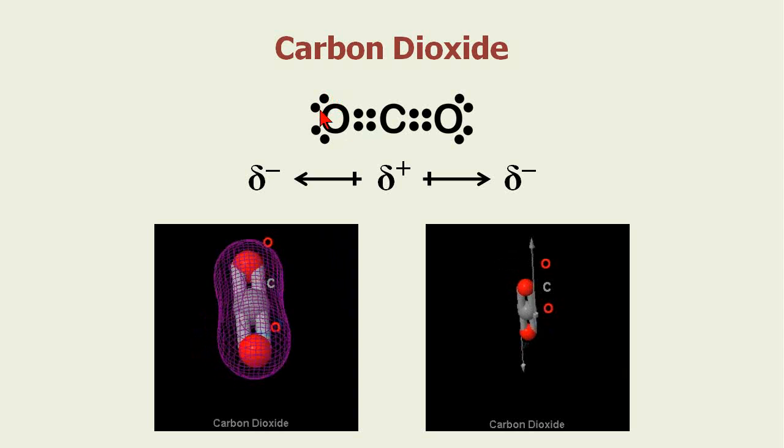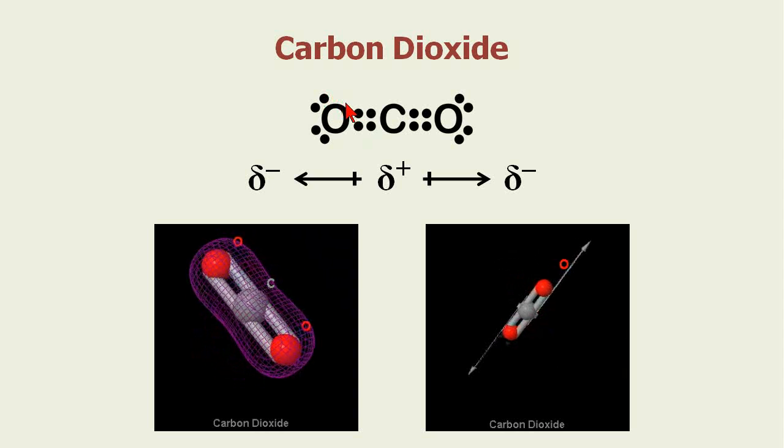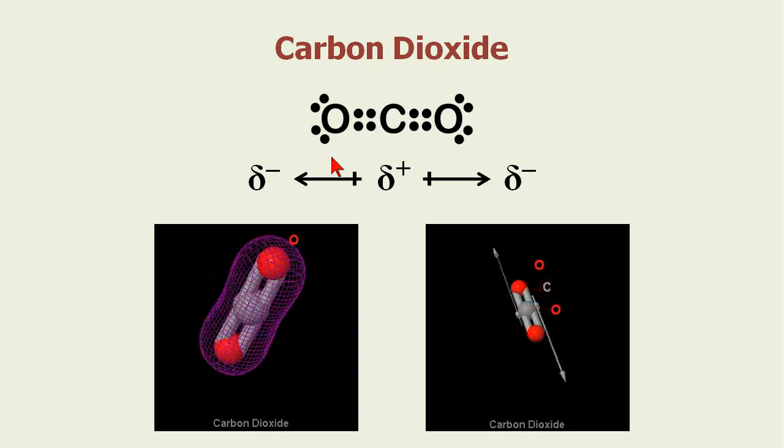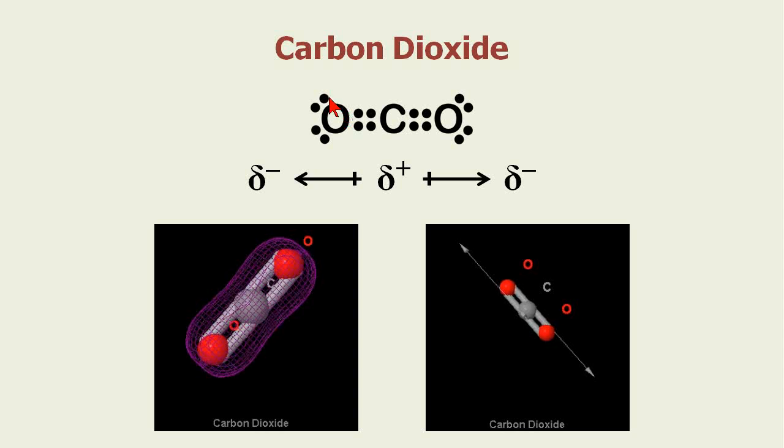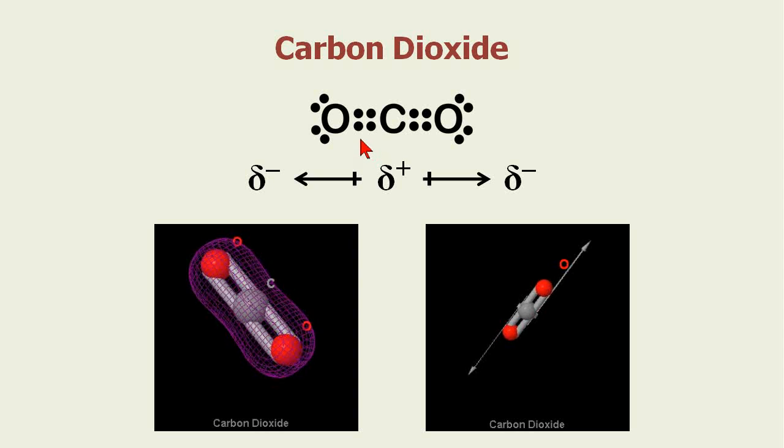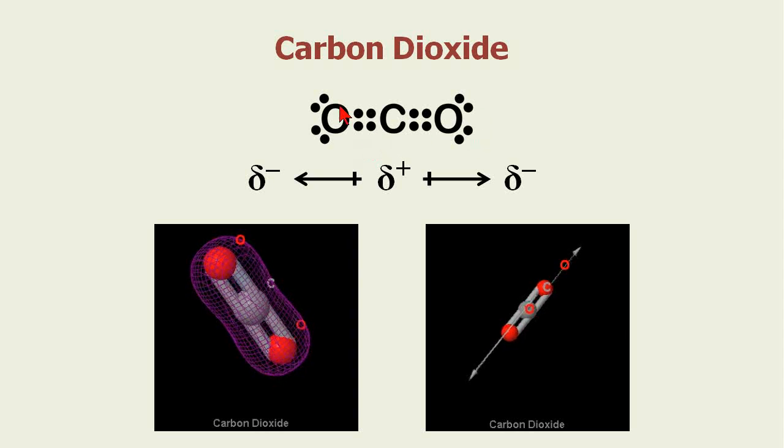These electrons are not attracted to each other, so they push each other away. Opposites attract and similar negatives repel each other. So they're repulsed and you get something that looks like this for the dot diagram.